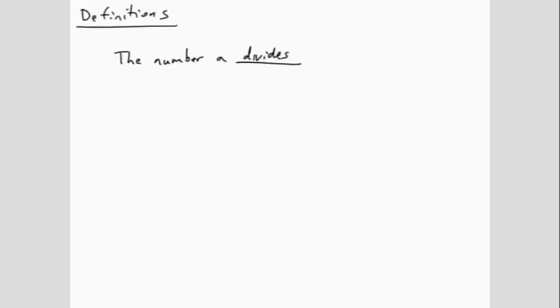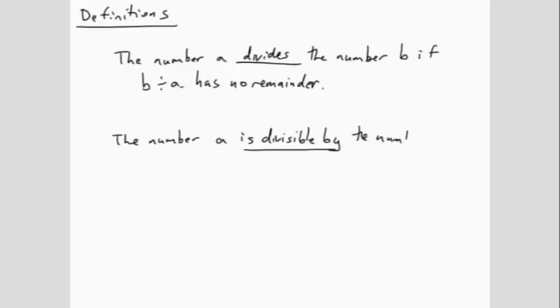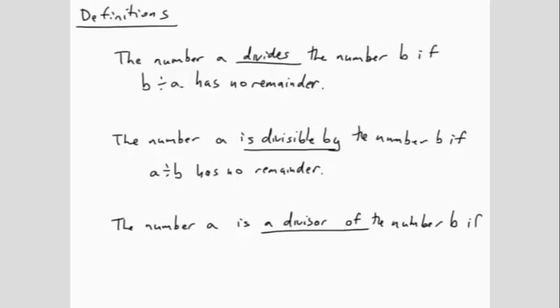Definitions: The number A divides the number B if B divided by A has no remainder. The number A is divisible by the number B if A divided by B has no remainder. The number A is a divisor of the number B if B divided by A has no remainder.